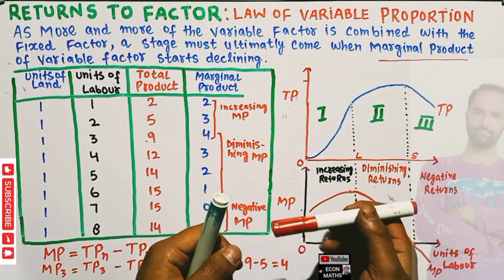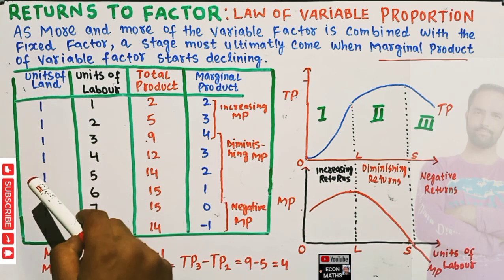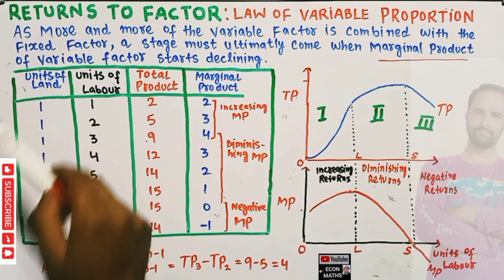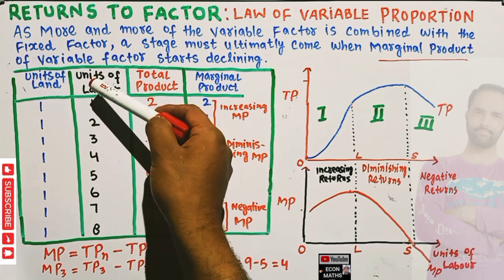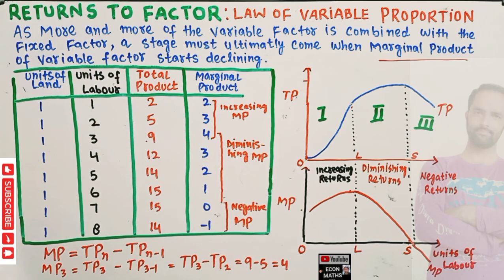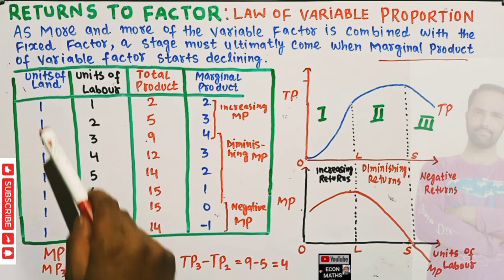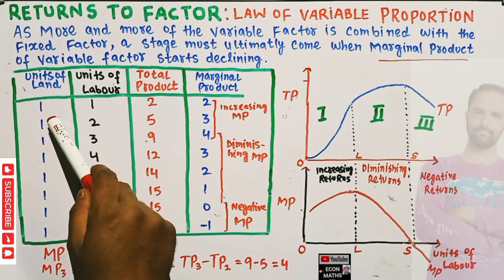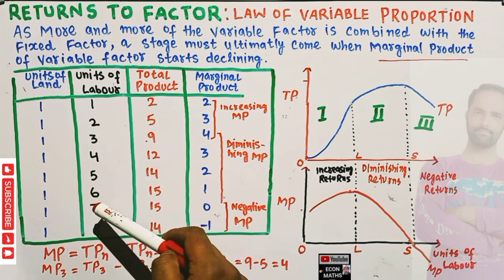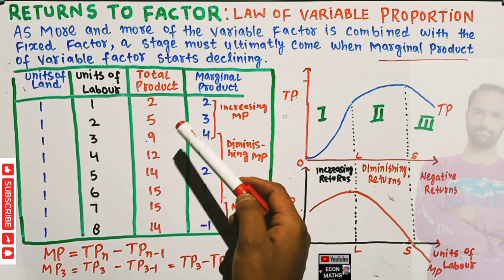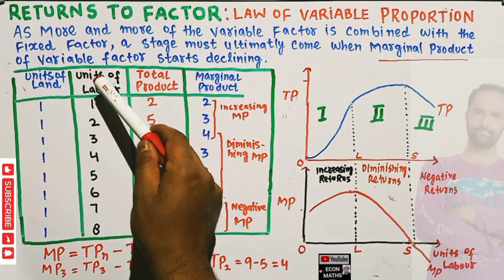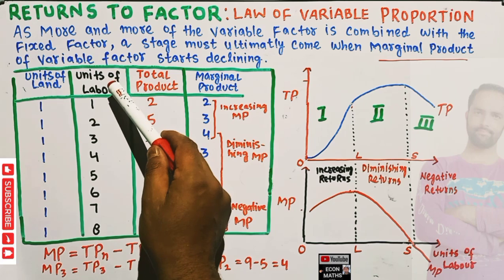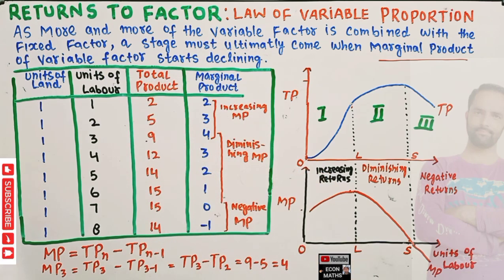Let us say we have units of land which is fixed, and units of labor — or number of laborers — which are our variable factors. The law simply says when we combine the fixed factor with the variable factor, a stage must ultimately come when the marginal product of the variable factor, which is here labor, starts declining.